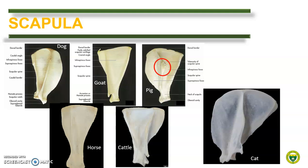We can also use the trapezious tubercle in the scapula of the pig to determine the infra and supraspinous fossa. The tubercle always overhangs at the infraspinous fossa. The acromion is absent in pig and the spine fades distally. This is the same in the case of the horse — the trapezious tubercle is present but not as distinct as in the pig. The spine divides the lateral surface into two unequal fossae: the infraspinous fossa is broader while the supraspinous fossa is narrower.